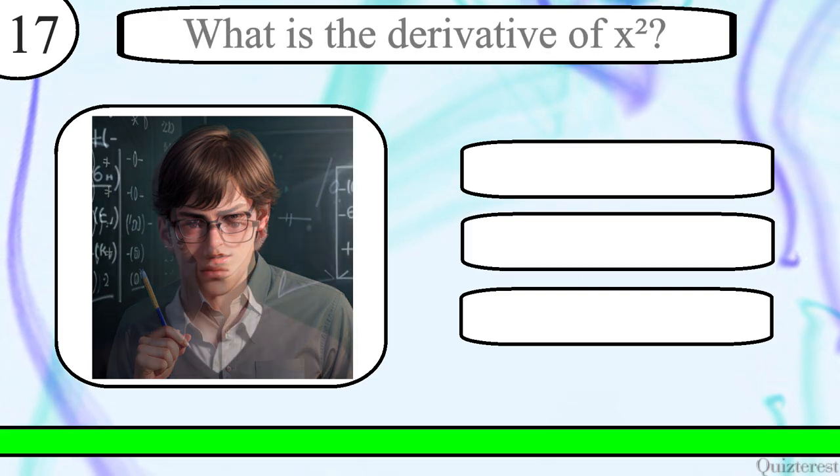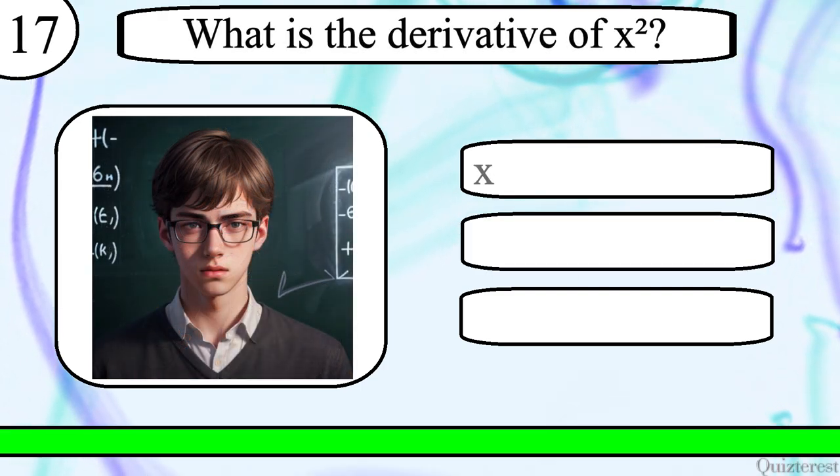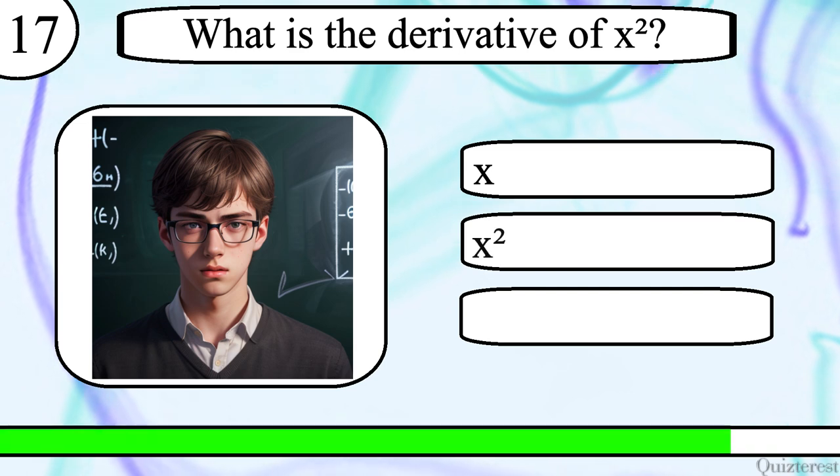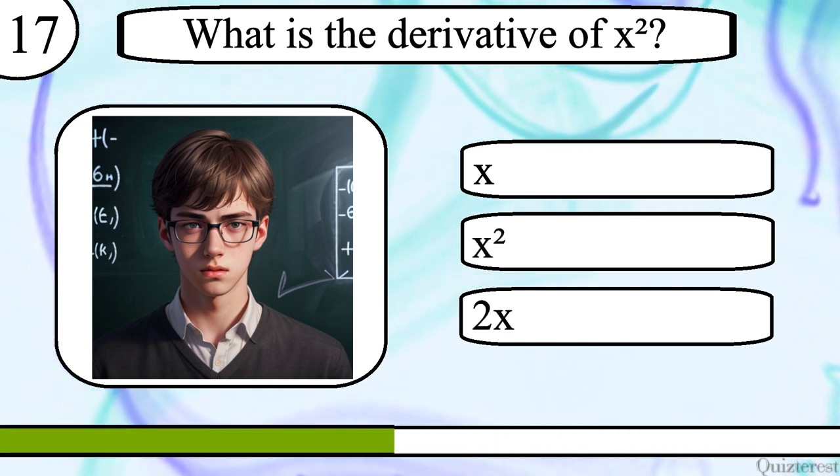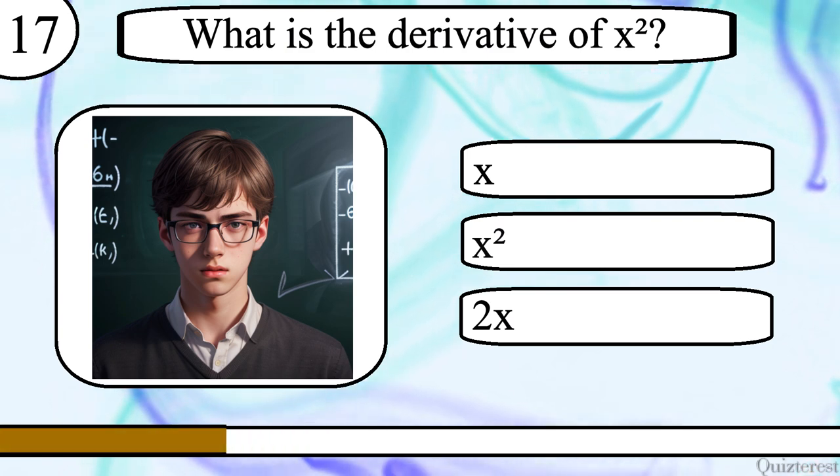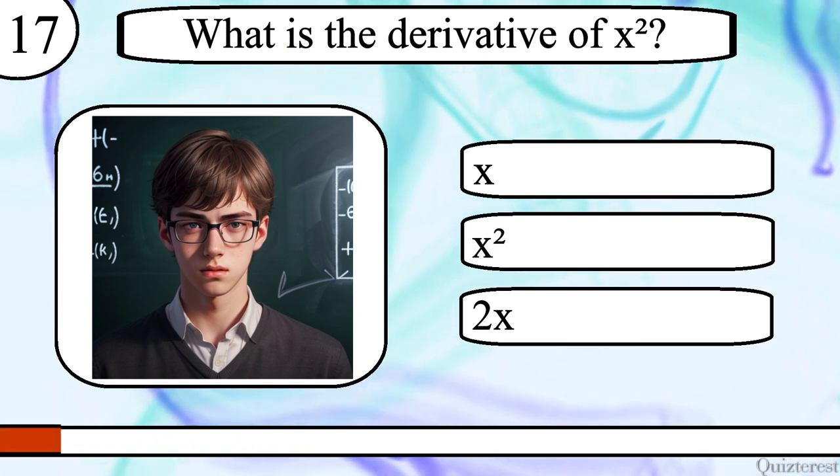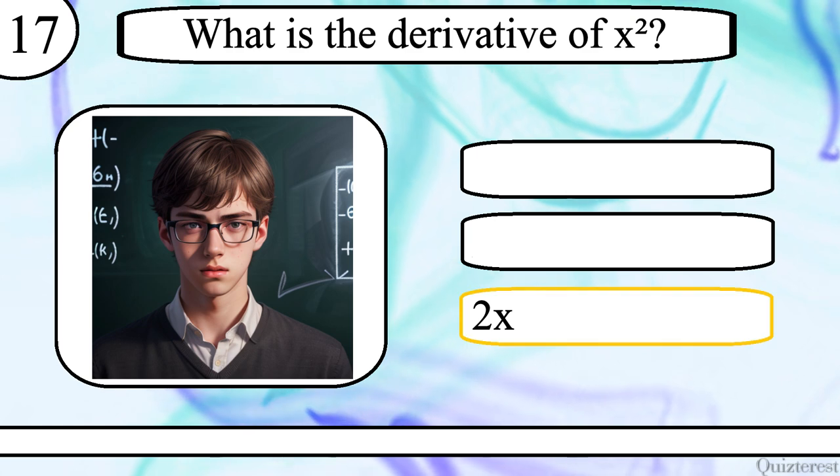Question 17. What is the derivative of x squared? x, x squared, or 2x? The correct answer is 2x.